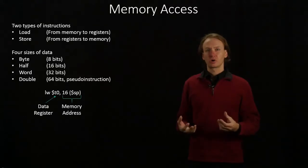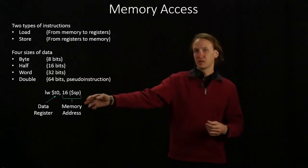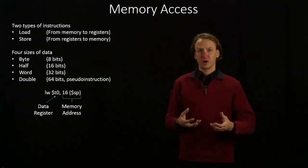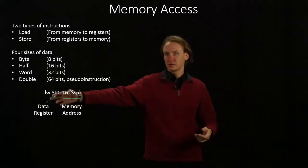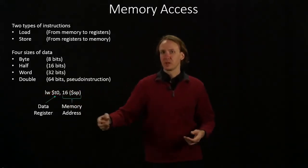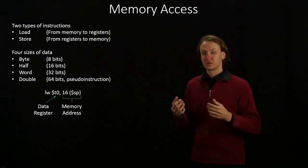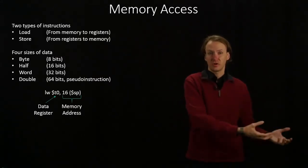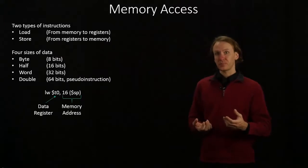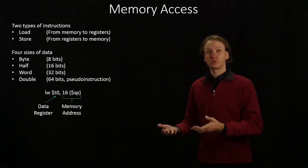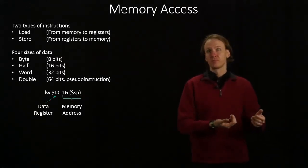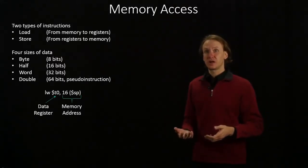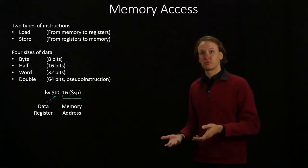The actual instructions that we'll work with are all pretty similar. They have one general format, and we just change some of the parameters according to what we're interested in doing. The L tells us that we want to load some data — we're copying data from memory into a register. If I replace that L with an S, this would be a store instruction, and I'd be copying data from a register into memory. The W tells me that I'm interested in loading an entire word, so it will fetch 32 bits of data and place them into a register.